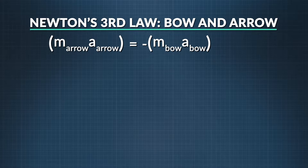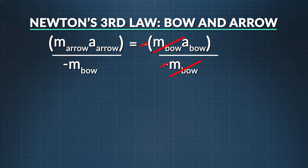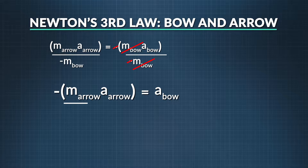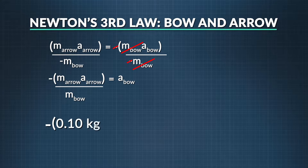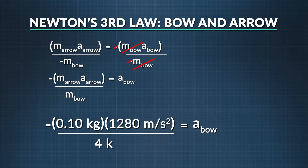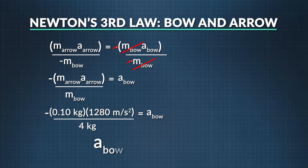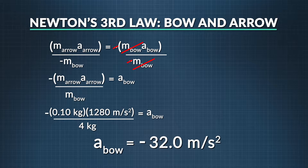We see that by substituting in Newton's second law, the mass of the arrow times the acceleration of the arrow equals the mass of the bow times the acceleration of the bow in the opposite direction. We can rearrange this equation to solve for the acceleration of the bow. The acceleration of the bow equals negative the mass of the arrow times the acceleration of the arrow divided by the mass of the bow. Plugging in our values: negative 0.10 kg × 1,280 m/s² ÷ 4 kg = negative 32.0 meters per second squared.